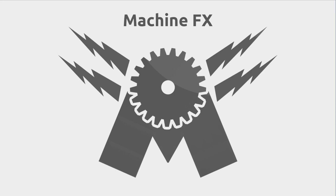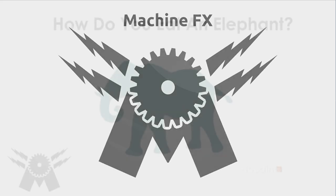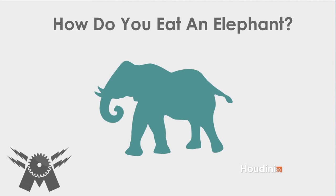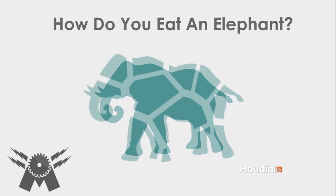These are strategies for learning pretty much anything, with some focus on VFX and, of course, Houdini. So let's say you're setting out to do something epic, like eat an elephant, for example, or learn Houdini. There are over 1,000 nodes in Houdini, and an infinite number of effects that can and will be created. So how do you tackle this?